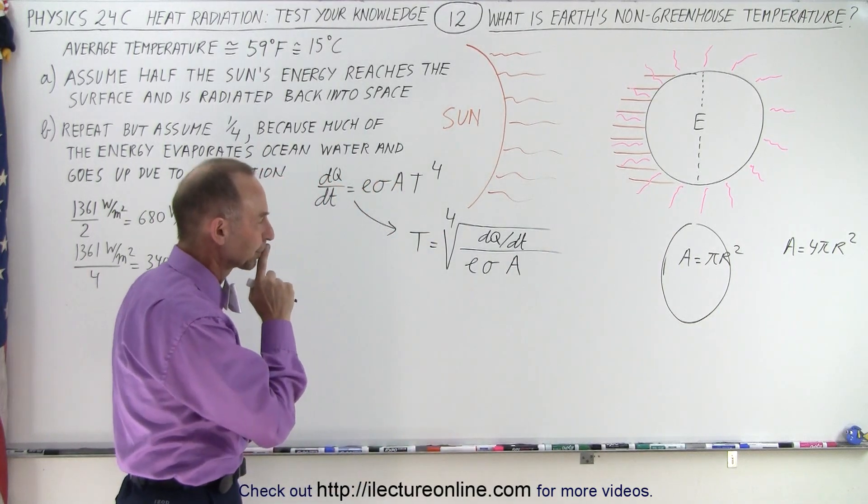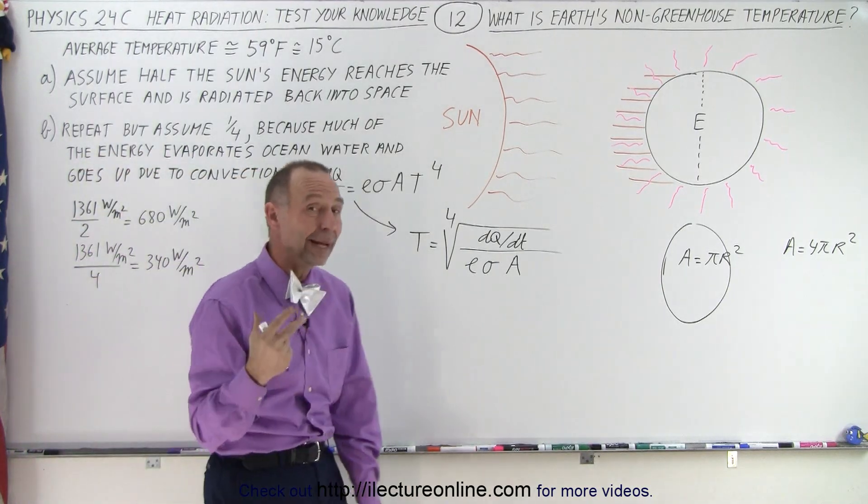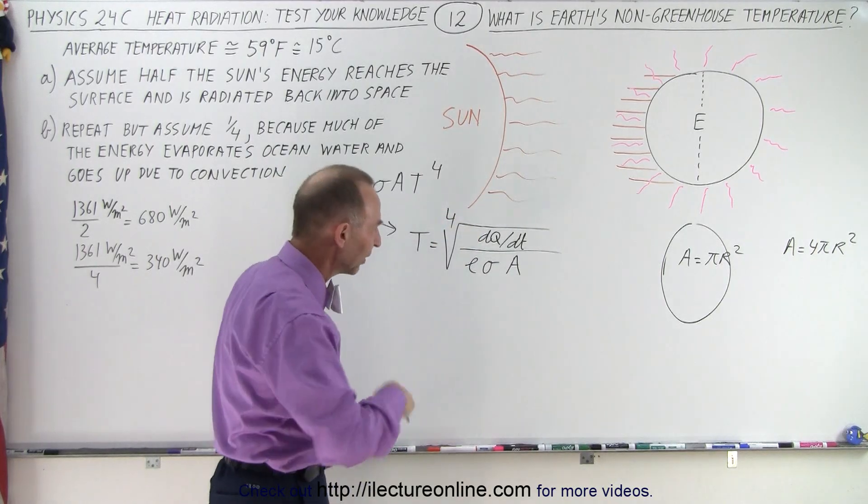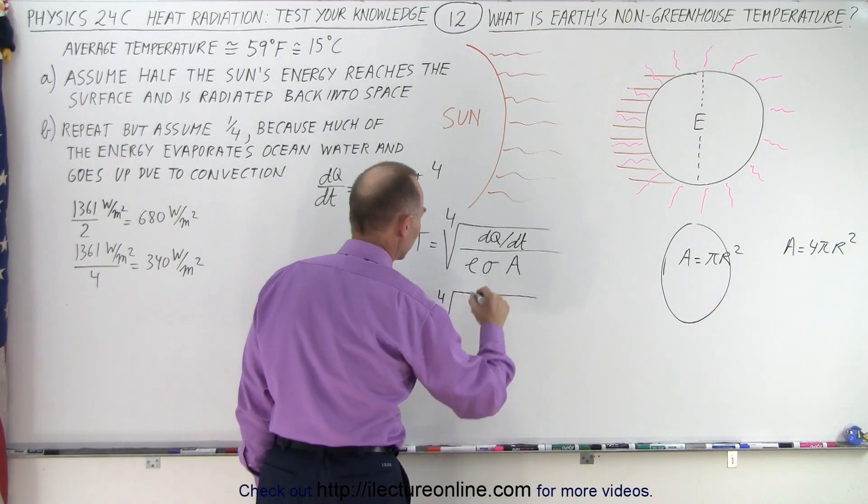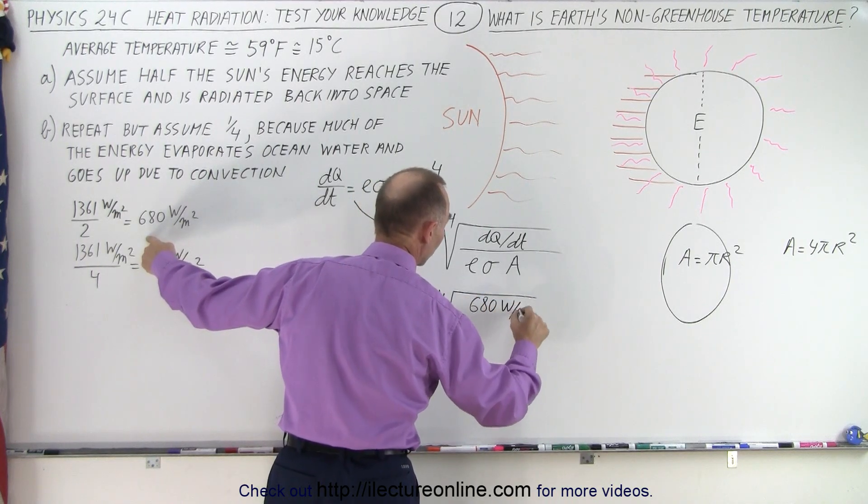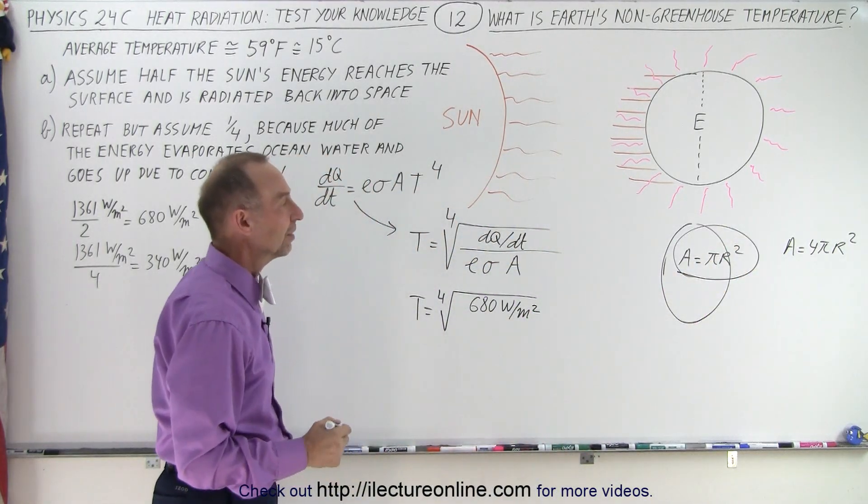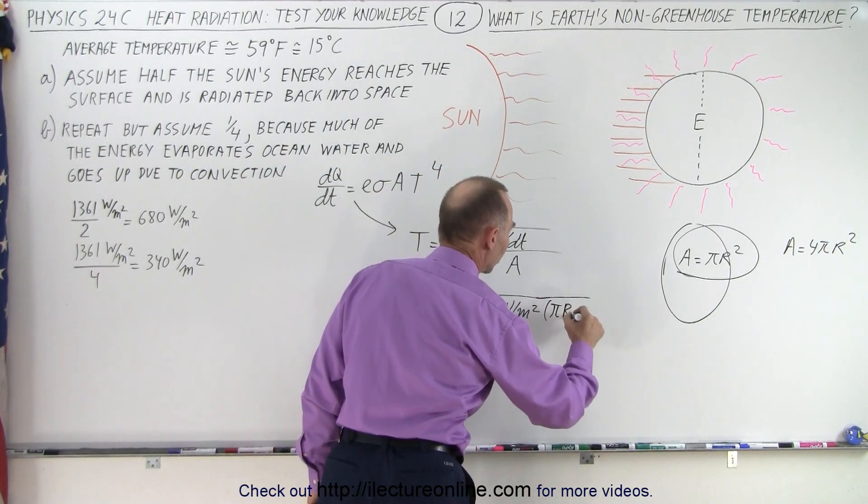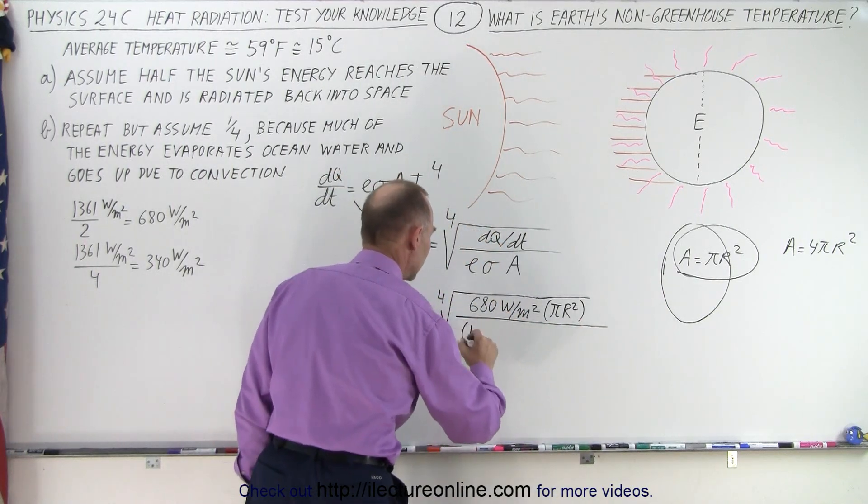All right now what we're going to do here is we're going to start out with the first number. We're going to take half of all the incoming radiation assuming it reaches the surface and it's re-radiated back out. Of course that's not quite the model but let's start with that number first and see what we get. So T is equal to the fourth root of dQ/dt which would be 680 watts per square meter and of course that's assuming that the area that total area that received from the sun is πr² and so let's go ahead and multiply that times πr² for the total surface area or equivalent surface area of the earth divided by ε. Let's call ε equal to 1.